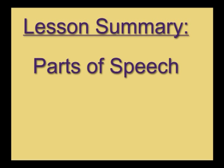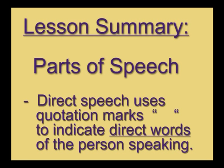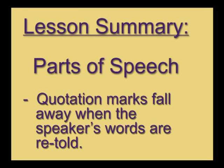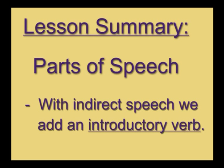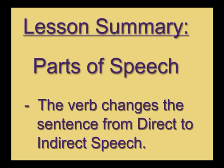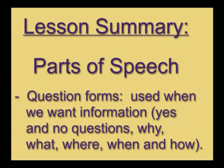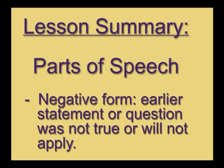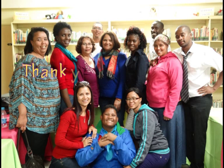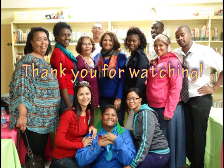Viewers, today we learned how to use different parts of speech correctly in sentences in the English language. Direct speech uses quotation marks to indicate the direct words of the person speaking. Quotation marks fall away when the speaker's words are retold by someone else. When using indirect speech, we add an introductory verb which changes the sentence from direct to indirect speech. Question forms are used when we want information, such as asking yes or no questions, or why, what, where, when and how questions. The negative form indicates that the earlier statement or question was not true or will not apply. It has been a pleasure to be in your company on this program. Lesson two in our English grammar series will be on reading with understanding and emotions expressed by a poet. Until then, take care.